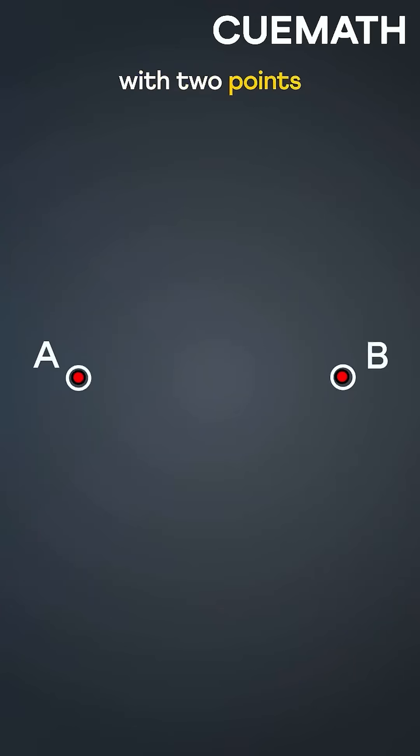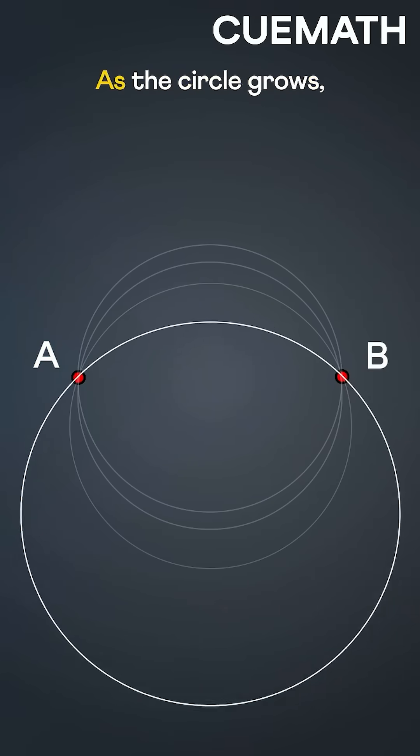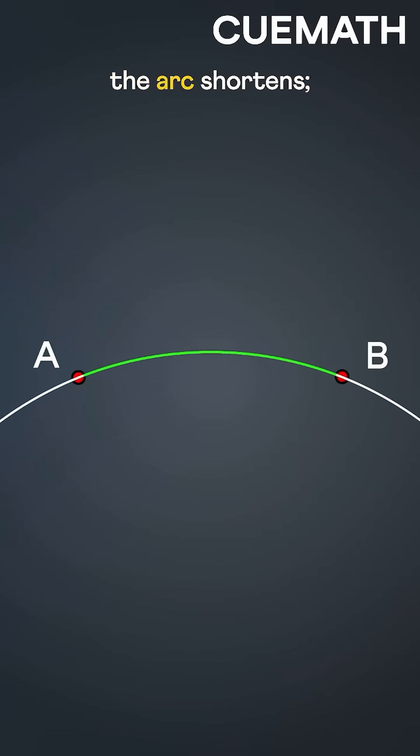Let's understand with two points in 2D. We can connect them with arcs of circles. As the circle grows, the arc shortens.